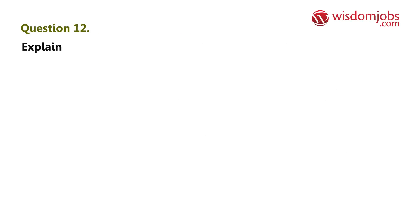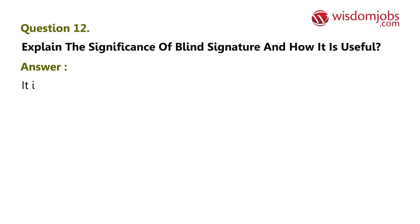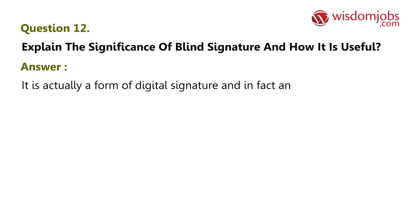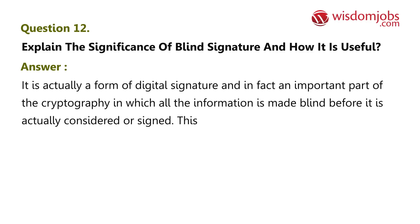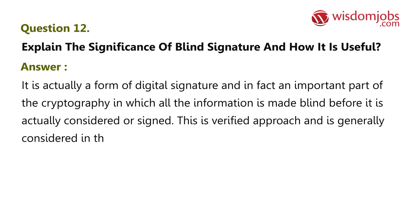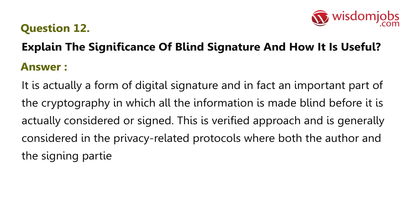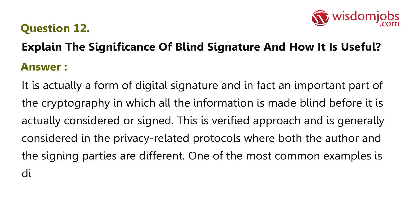Question 12: Explain the significance of blind signature and how it is useful. Answer: It is actually a form of digital signature and an important part of cryptography, in which all the information is made blind before it is considered or signed. This is a verified approach generally considered in privacy-related protocols where both the author and the signing parties are different. One of the most common examples is a digital cash scheme.